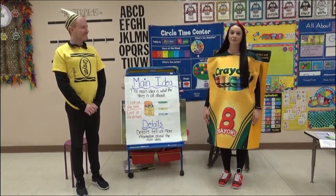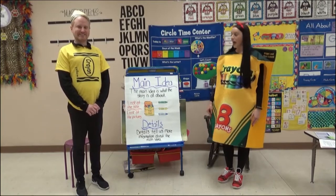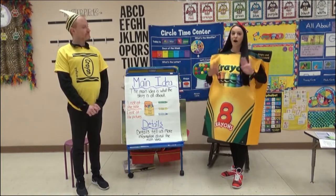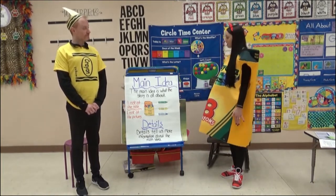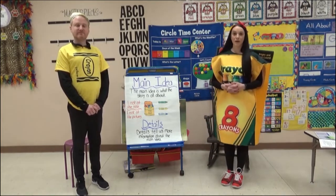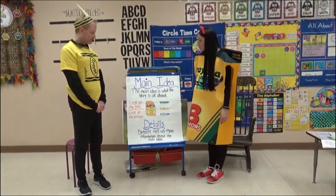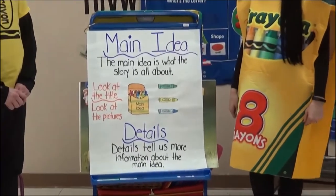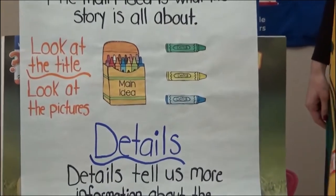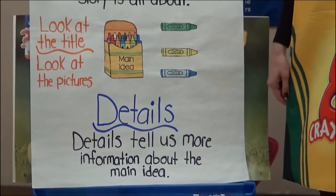Well today we're going to be focusing on main idea and details in a story. Think of the main idea as a box of crayons. The box is the main thing that holds all the crayons, and the crayons are the details that when they come together make up the crayon box. Without it, it's just a box. The main idea is what the story is all about. To help you figure out what the main idea is, you can look at the title or look at the pictures in your story. The details tell us more information about the main idea.